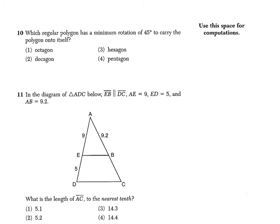Question 10 says, which regular polygon has a minimum rotation of 45 degrees to carry the polygon onto itself? Regular polygon means that there are congruent sides and angles. And we are rotating to carry the polygon onto itself, meaning we want it to look the same once we rotate it. So before I can even choose an answer here, I have to know what each shape looks like or at least how many sides it has.